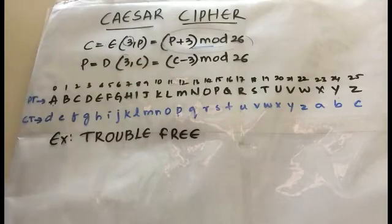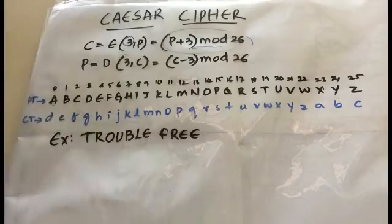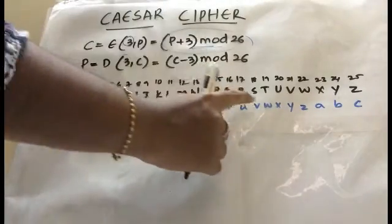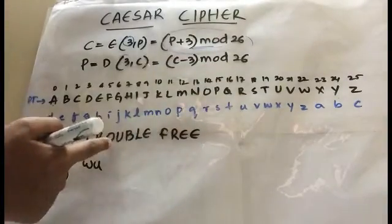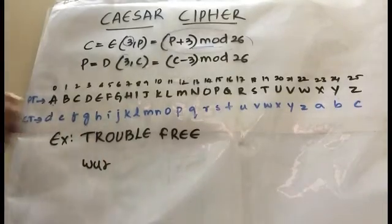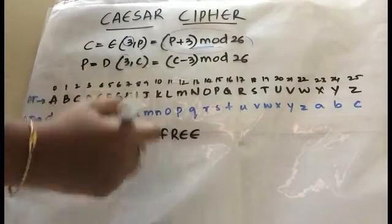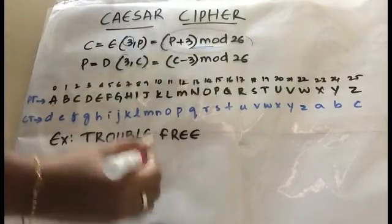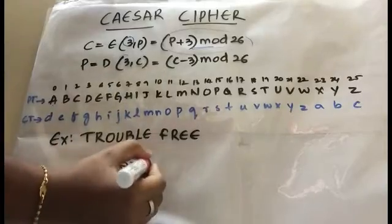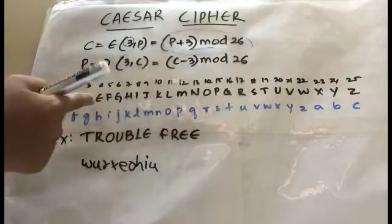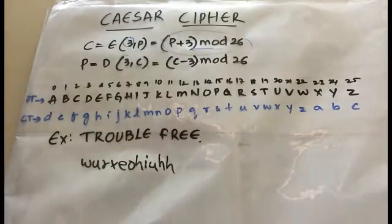Let's apply this to an example — the word 'TROUBLEFEE'. For T we get W, for R we get U, for O we get R, for U we get X, for B we get E, for L we get O, for E we get H. So TROUBLE becomes WURXEOH. For FREE: F→I, R→U, E→H, E→H.